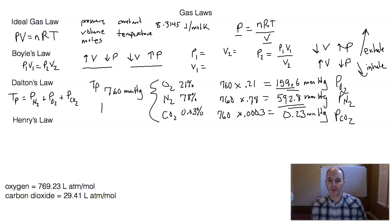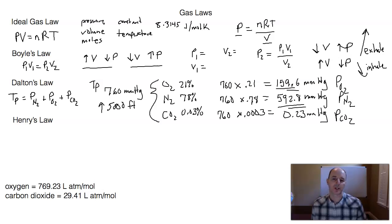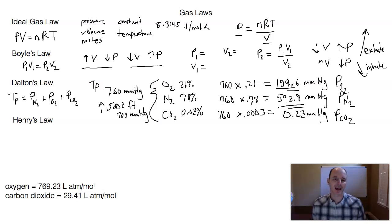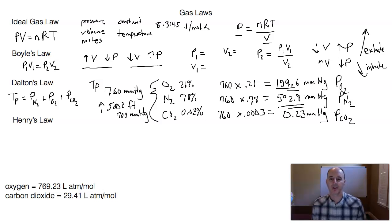If you go up in elevation — let's say we go to 5,000 feet in elevation — then the total pressure in the atmosphere is going to be less. Let's say the total pressure in the atmosphere is only 700 millimeters of mercury. Therefore, the partial pressures of each gas are going to be different: 21% of 700, 78% of 700, 0.03% of 700, and you'll have different partial pressures for each gas in the atmosphere. So that's Dalton's law.